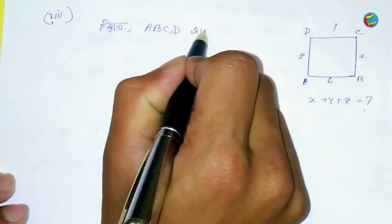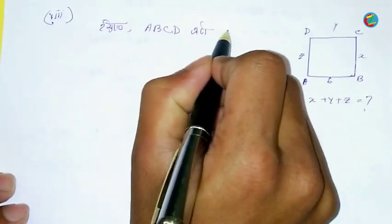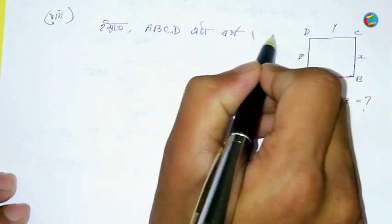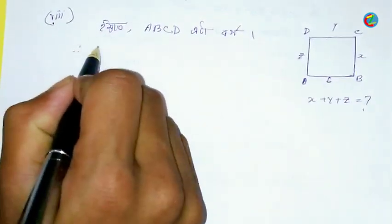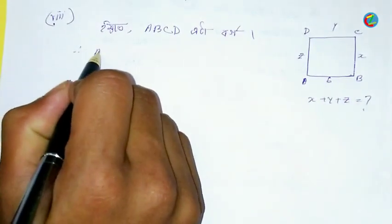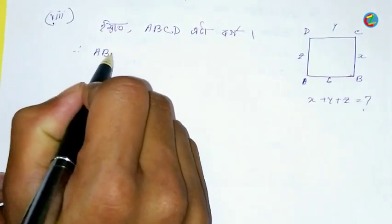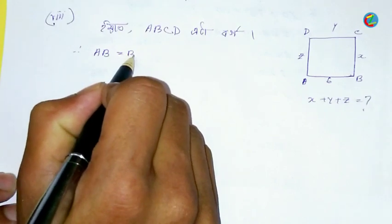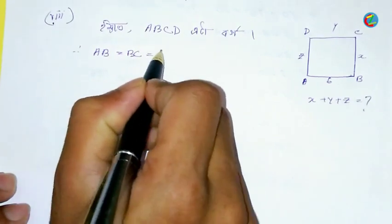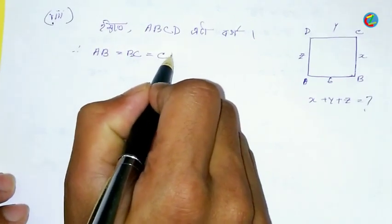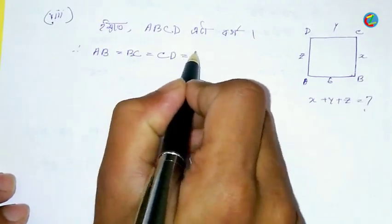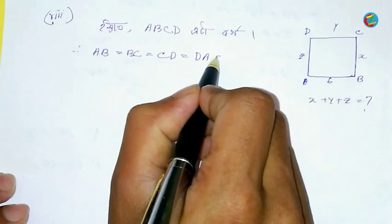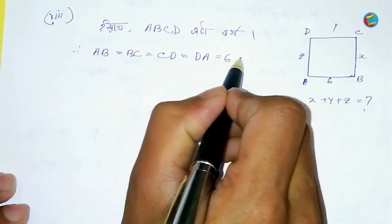Another: x plus y plus z. This is the idea of A, B, C, D. B is equal to C, D is equal to D. That is where you are now.